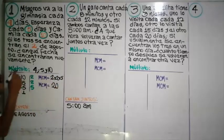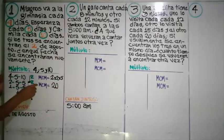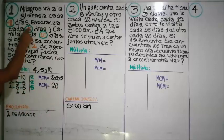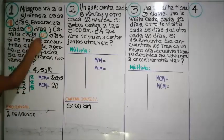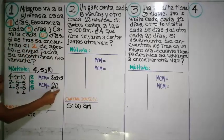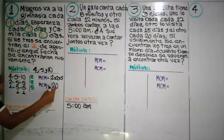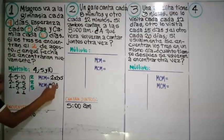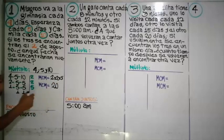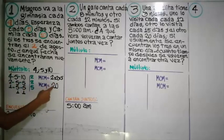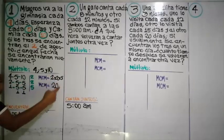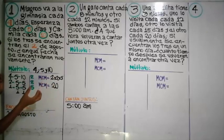El mínimo común múltiplo es veinte. El múltiplo común de cuatro, cinco y diez es veinte. Quiere decir que cada veinte días van a ir juntos.